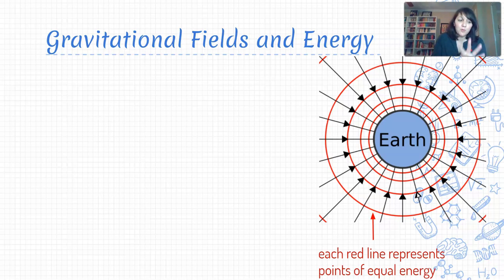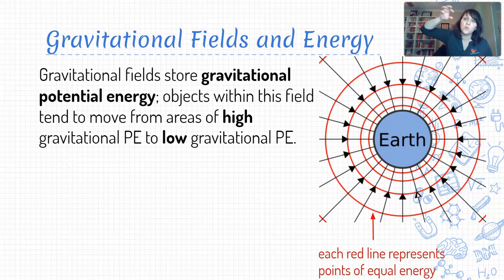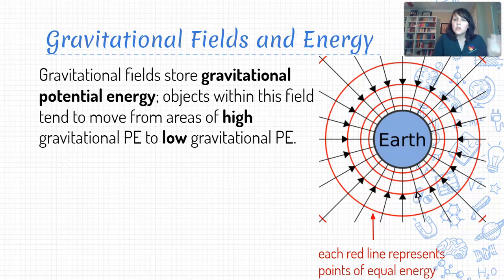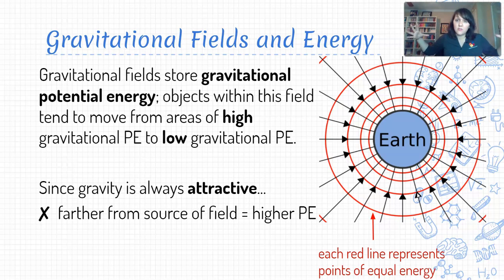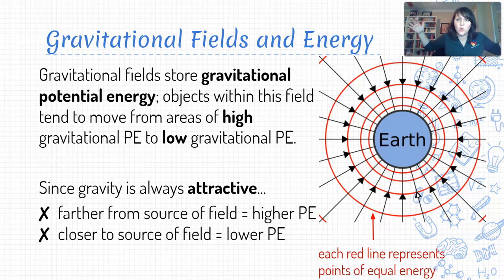Let's connect this back to energy. Let's quickly recap what we said about gravitational fields and energy. Gravitational fields store gravitational potential energy — when we raise up an object, we give it gravitational potential energy, meaning it's in a higher energy location within that gravitational field. If I let that object go, it drops from an area of high gravitational potential energy to an area of lower gravitational potential energy. Since gravity is always attractive and objects fall toward Earth, regions farther from the source of our field have higher potential energy, and regions closer to the source have lower potential energy.